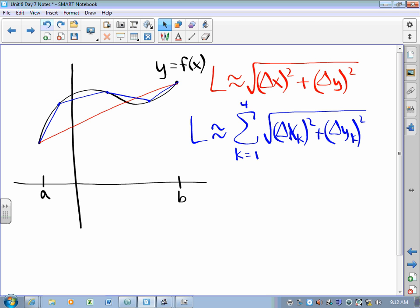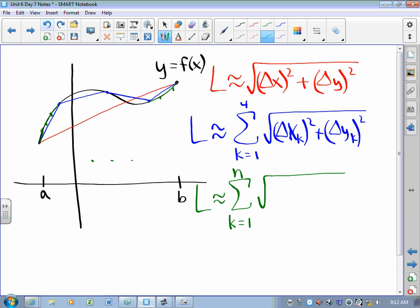Let's pick n demarcation points and connect all of those dots so that there are n little line segments. Arc length is approximately equal to the sum as k goes from 1 to n of the square root of delta x sub k squared plus delta y sub k squared. We're going to make the things we're using to approximate smaller and smaller, thinner and thinner. We're going to get infinitely many of them, and that's going to turn into an integral.